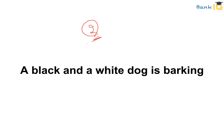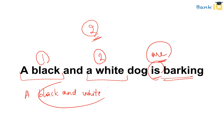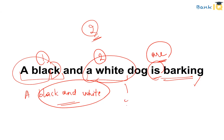Moving on to the second question: 'A black and a white dog is barking.' The error is that 'a black and a white dog' refers to two separate dogs, meaning the subject is plural. Because there are two entities in the subject, we use a plural verb. One black dog and another white dog are both barking. So the correct sentence is: 'A black and a white dog are barking.' Note: if it were 'a black and white dog,' that would be one dog, and 'is' would be correct.